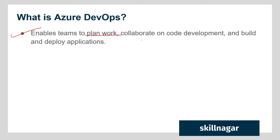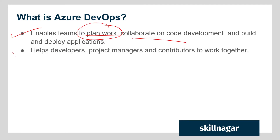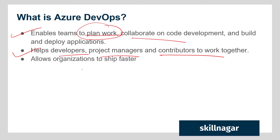So first thing first, let's try to understand what Azure DevOps actually is. It enables teams to plan work and collaborate together with various stakeholders. It can be related to code development, testing, or deploying the application. We are going to plan and work together on individual or group projects. It helps developers, project managers, and contributors to work together, because software development involves a lot of stakeholders and it gets very difficult to manage without a platform like this.